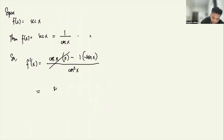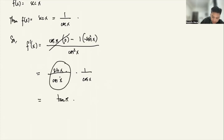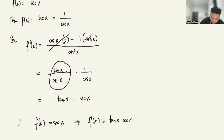This simplifies to sine x over cosine squared x. We can split this as sine x over cosine x times 1 over cosine x, which is tangent x times secant x. Therefore, if f(x) = secant x, then f'(x) = tangent x times secant x.